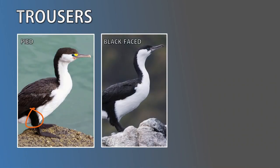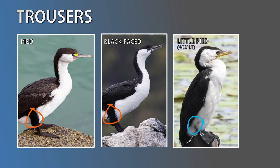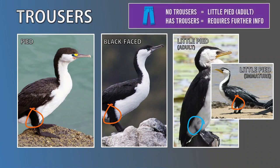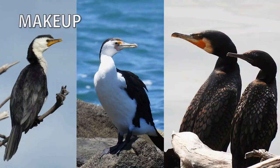A valuable technique to identify tricky black and white cormorants is to look for 'trousers' — black stripes of feathers that run down the legs, typically only visible when birds are perched or on land. All black and white cormorants wear trousers. The little pied is an exception — in Australia, little pied adults are always trouser-free. So when we see a black and white cormorant without trousers, we know it must be a little pied adult. If the cormorant is wearing trousers, we'll need to examine it for further clues.